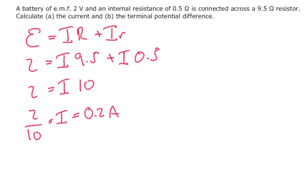So 2 equals I times 10, therefore 2 divided by 10 equals I, which is 0.2 amps. Now this part of the equation here, that is the terminal PD, so PD equals I times big R.